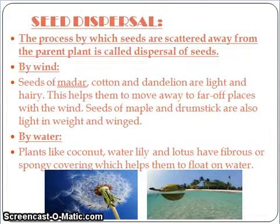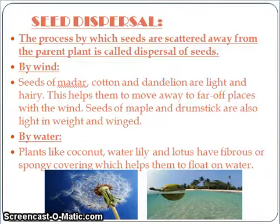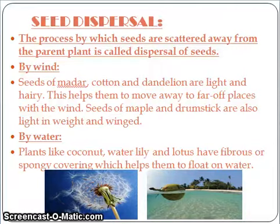Let us now learn about seed dispersal. Children, have you ever thought about what would happen if seeds grow close to each other? There will be competition for air, water, sunlight, and nutrients. To avoid overcrowding, nature has provided some agents that help to scatter the seeds. These agents are known as agents of dispersal. Seed dispersal is the process of scattering of seeds by these agents. They are air, water, and animals.